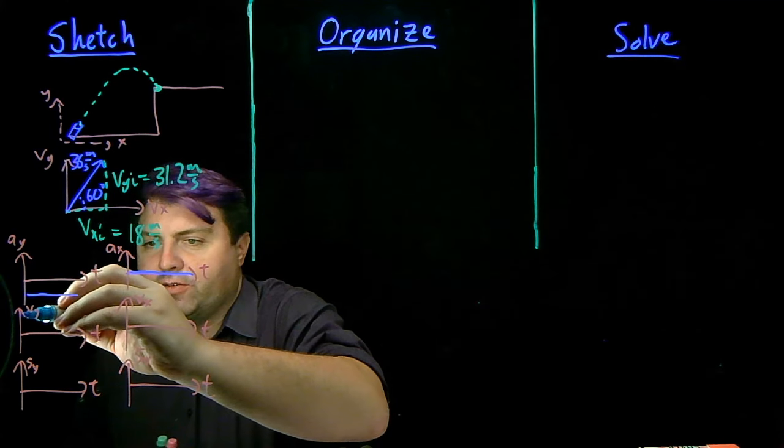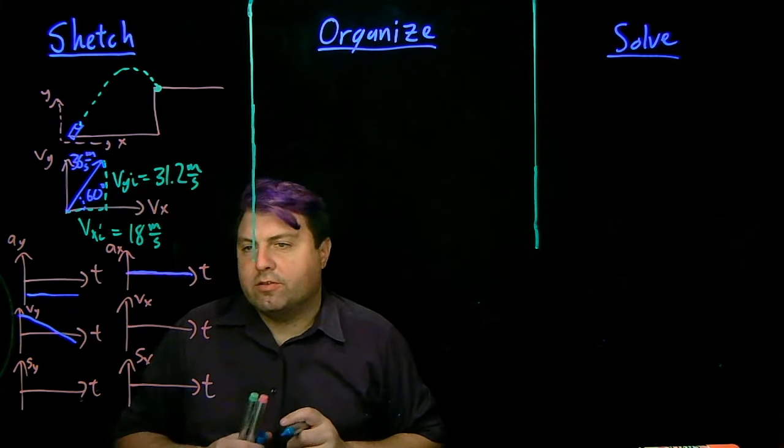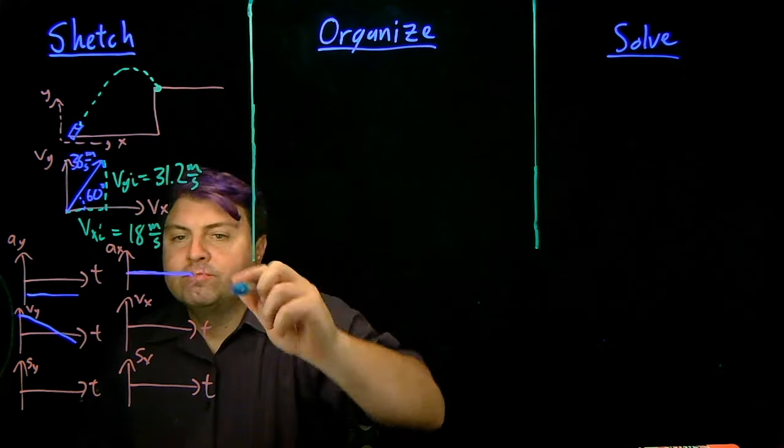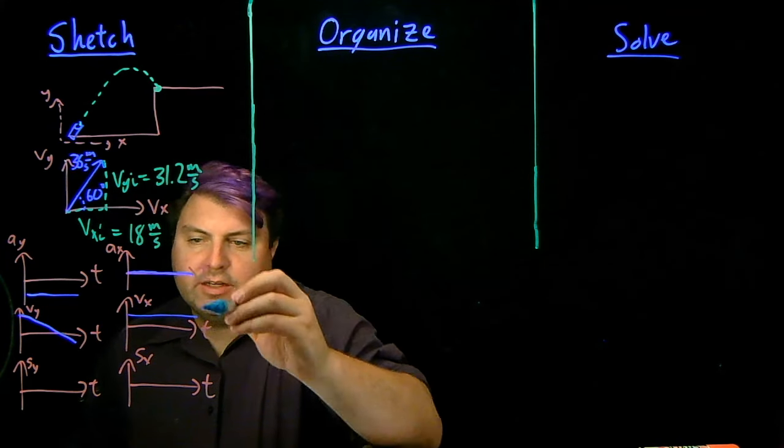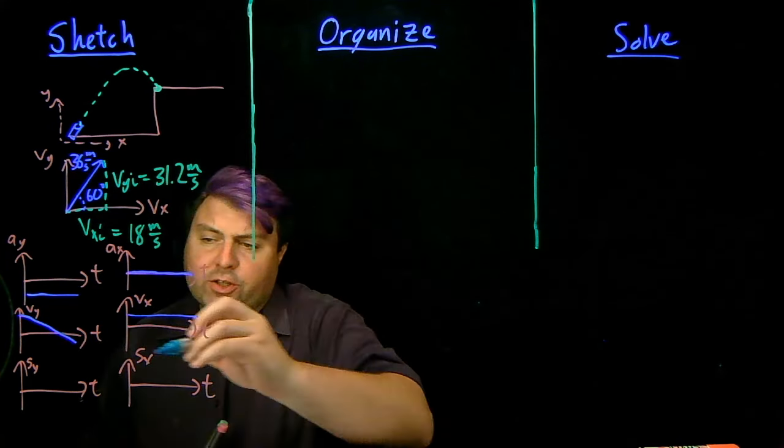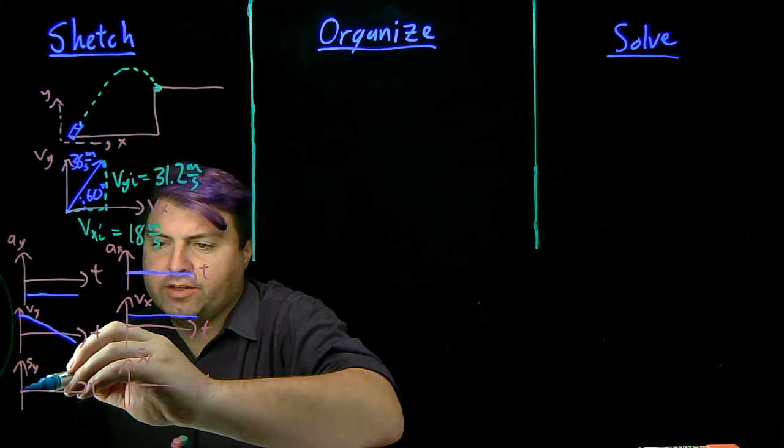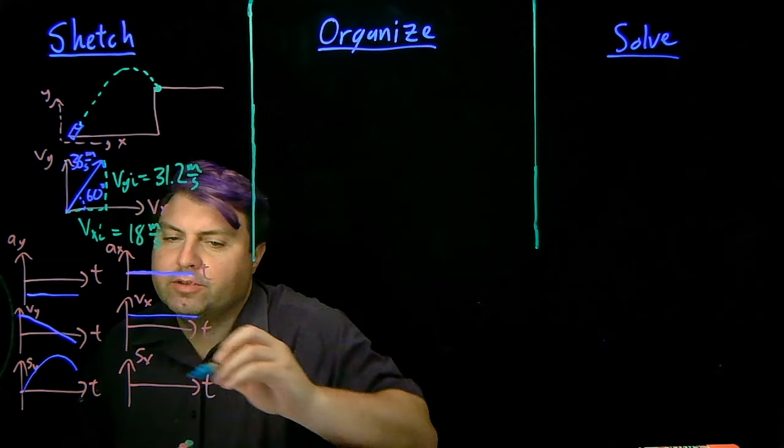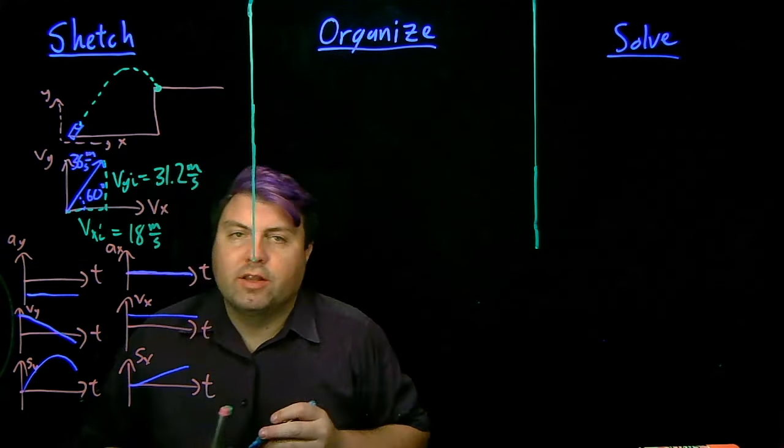Our velocity of y is going to start at 31.2 and go down to some negative value. Our velocity in the x is going to stay a nice constant 18. Our position of the y is going to look very similar to our y versus x as long as we have 0 acceleration of the x which we do. And then our position of the x is just going to be a nice thing like this.